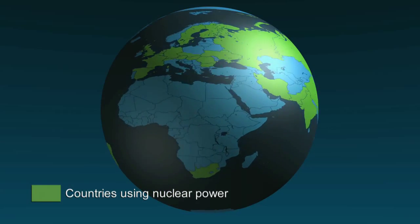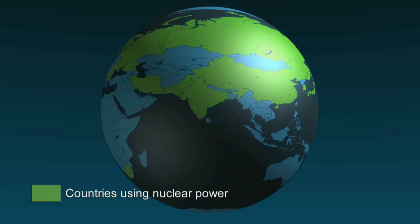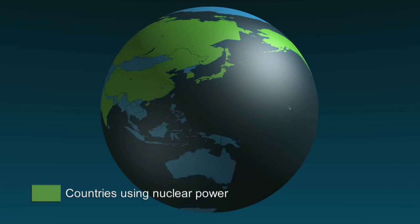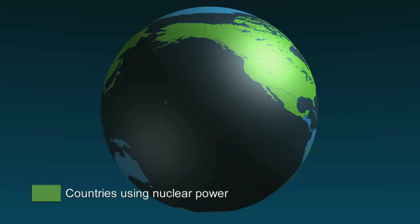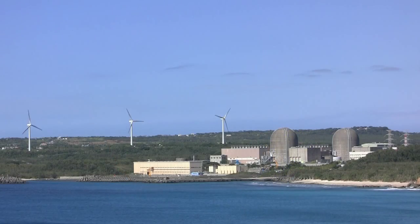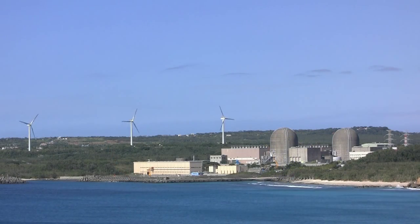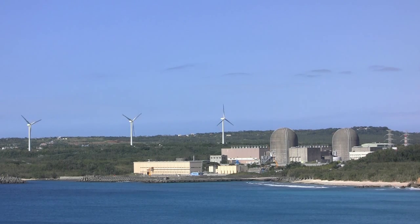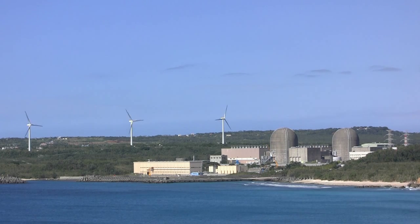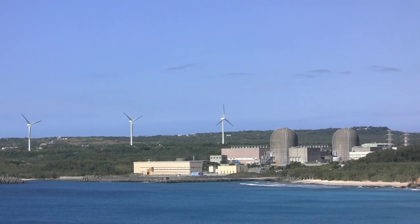More than 30 countries use nuclear power. Some, like the United States, use the open fuel cycle, while others use the closed fuel cycle. Regardless of which option countries prefer, nuclear power can prevent the emission of 2.5 billion tons of carbon dioxide every year, while safely isolating waste products from the environment.